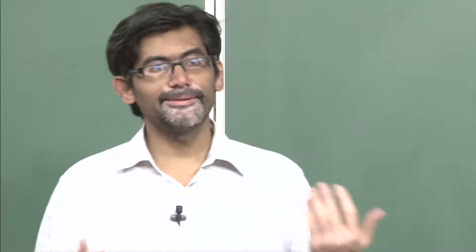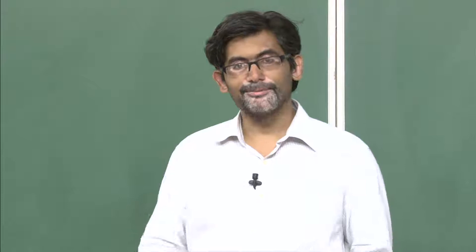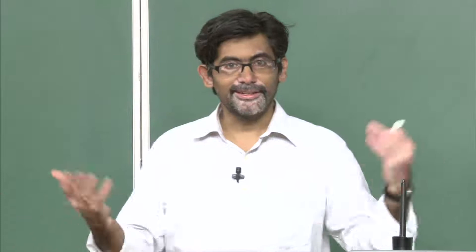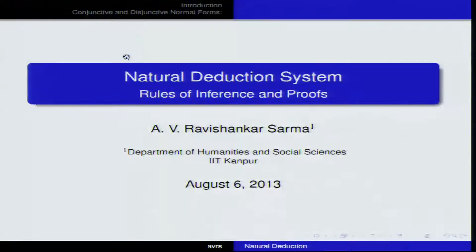There is one important theorem in propositional logic which tells us that whatever is provable is obviously true, and whatever is true is also provable. In that sense, if we can prove that something is a theorem, you have already shown that it is a tautology. In this lecture we will study natural deduction and then talk about some rules of inference for proving certain theorems.